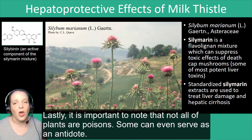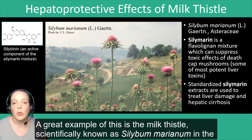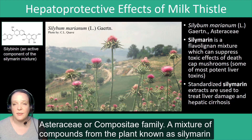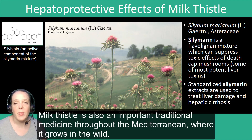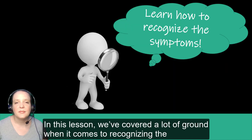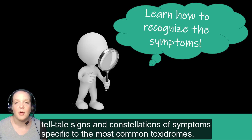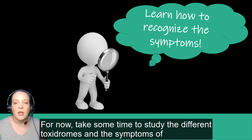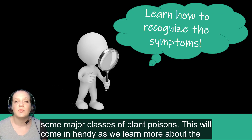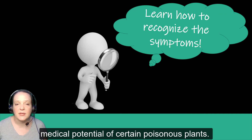Lastly, it's important to note that not all plants are poisons — some can even serve as antidotes to poisons. A great example is milk thistle, scientifically known as Silybum marianum in the Asteraceae or Compositae family. A mixture of compounds from the plant known as silymarin can suppress the liver-destroying actions of the deadly death cap mushroom. Milk thistle is also an important traditional medicine throughout the Mediterranean where it grows in the wild. In this lesson, we've covered a lot of ground when it comes to recognizing the tell-tale signs and constellations of symptoms specific to the most common toxidromes. In the next lesson, we'll go into more examples of specific plants associated with certain toxidromes. Take some time to study these different toxidromes and the symptoms of some major classes of plant poisons, as this will come in handy as we learn more about the medical potential of certain poisonous plants.